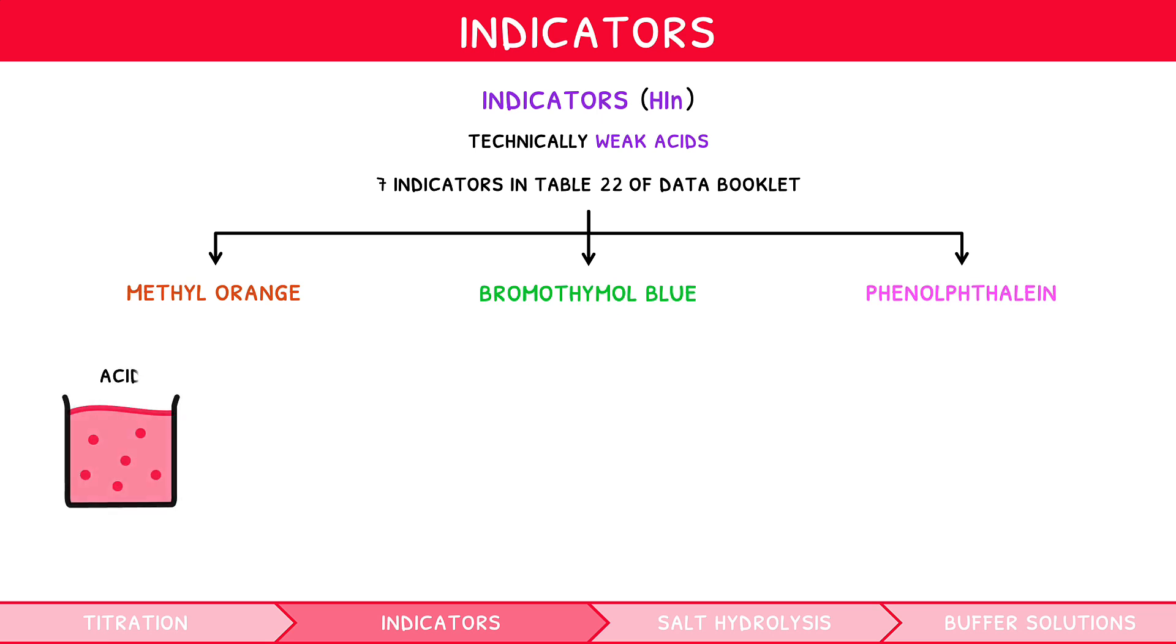Methyl orange is red in acid and yellow in alkali, and has a pH range of 3.1 to 4.4, making it suitable for strong acid, weak base titrations.